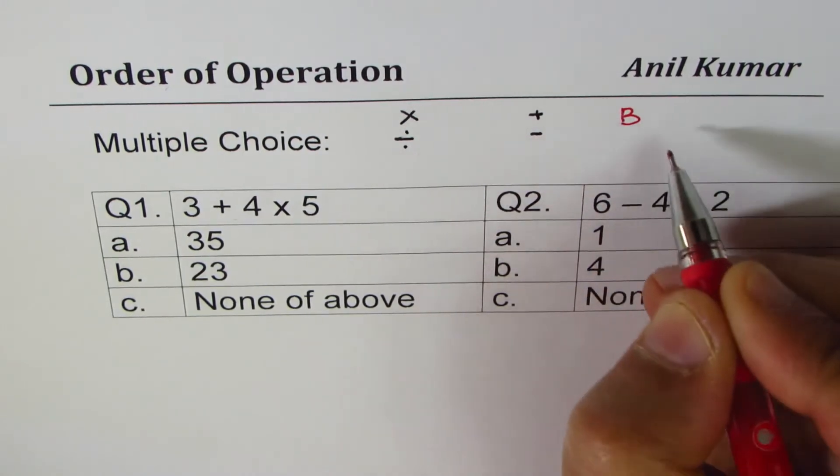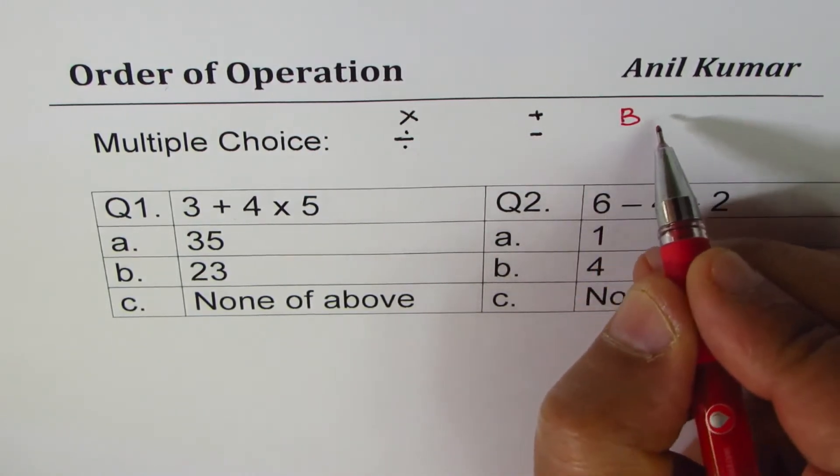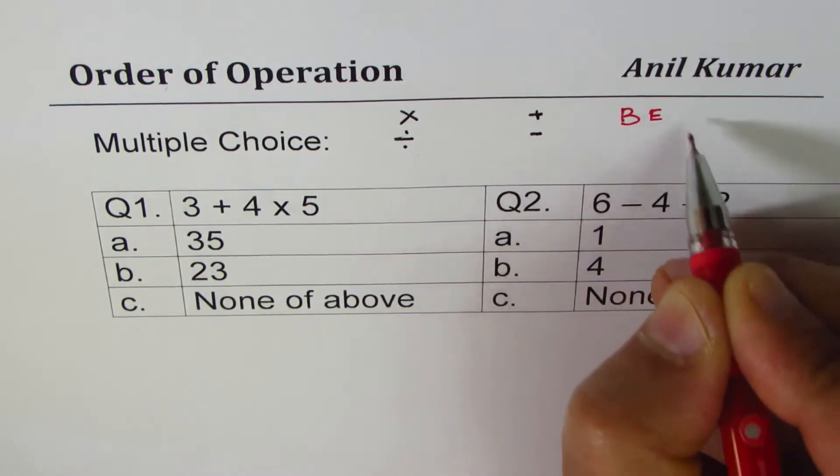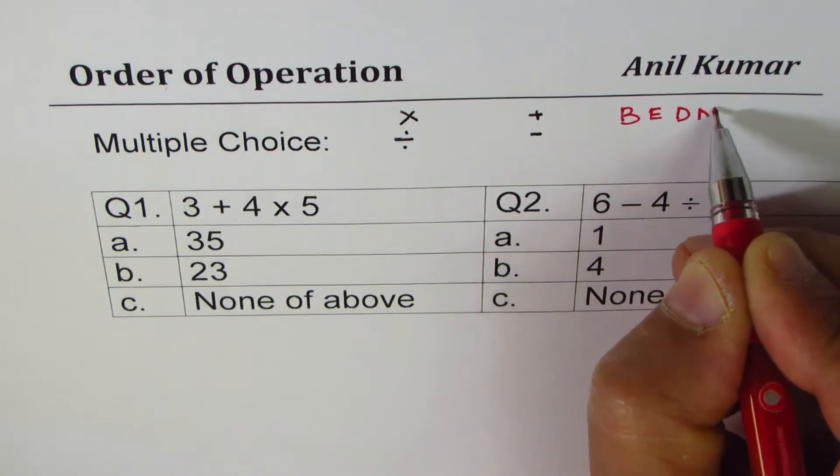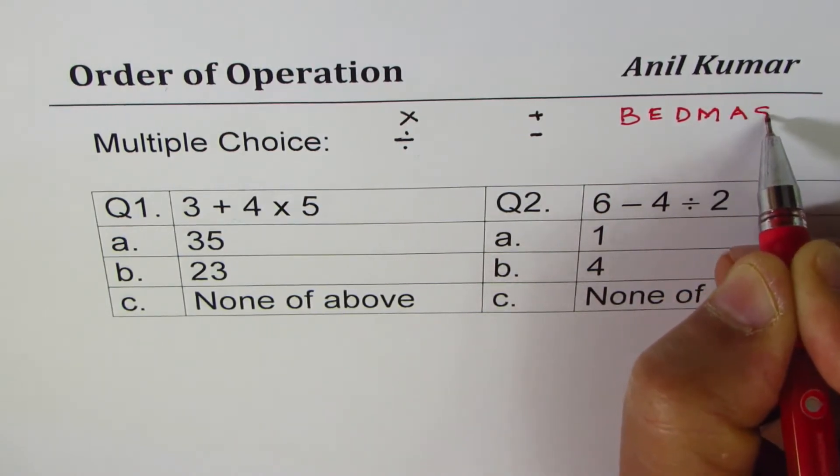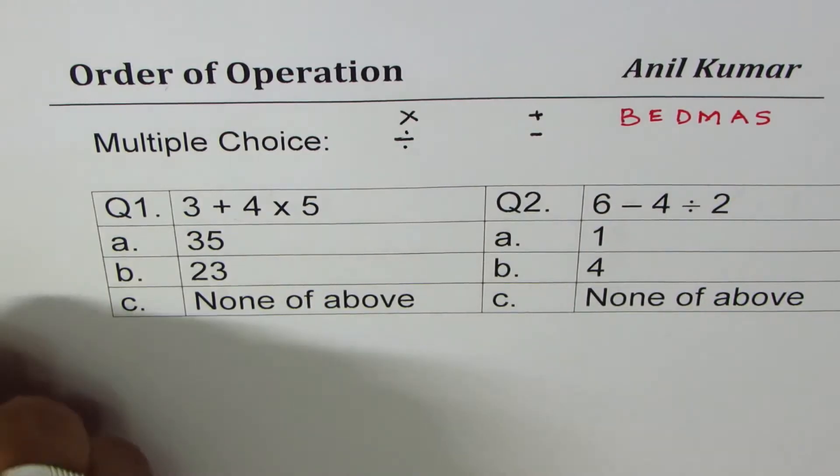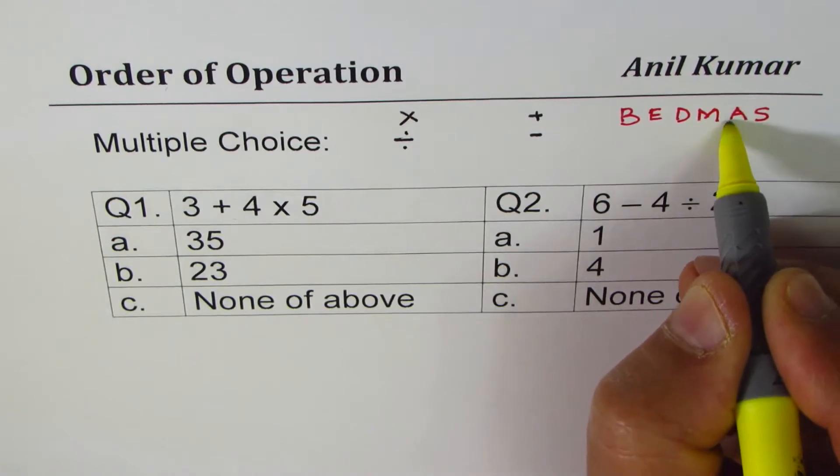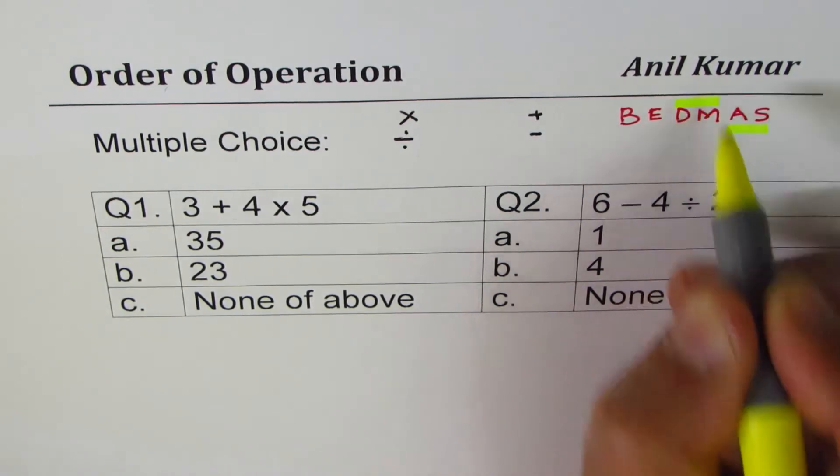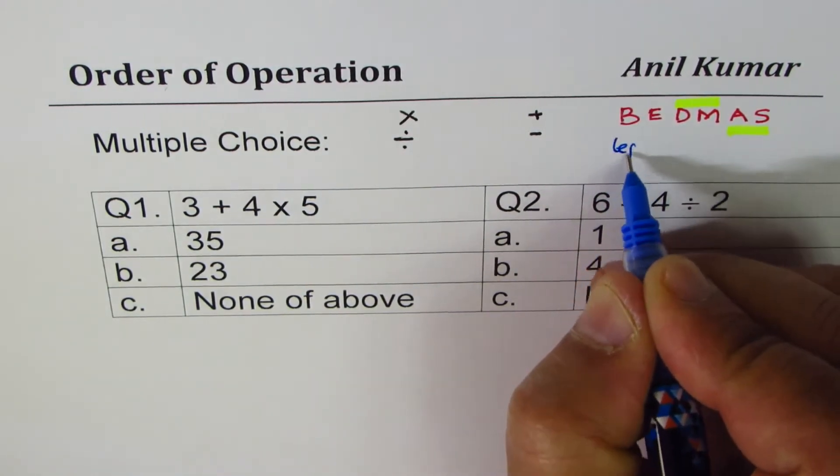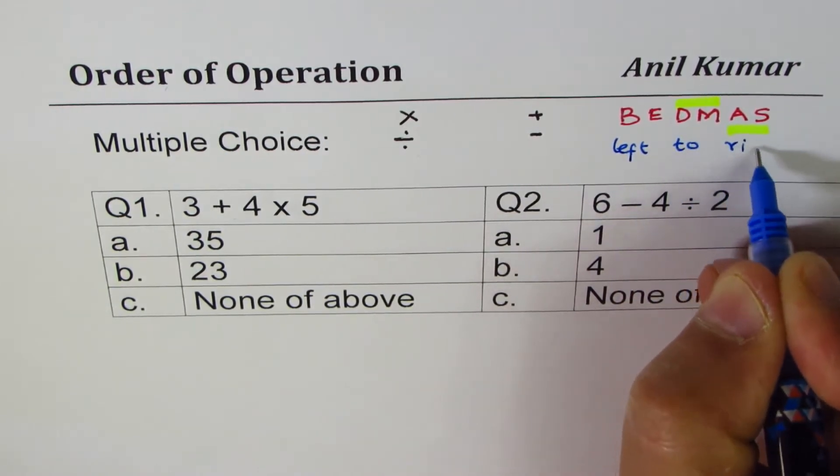Some of you might remember this by the acronym BEDMAS: B is for brackets, E is for exponents, D is for division, M is for multiplication, A for addition, S for subtraction. The important thing to understand is that division or multiplication is one group, and addition or subtraction is the other group.